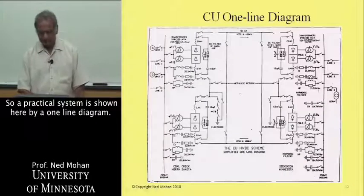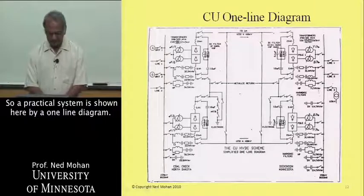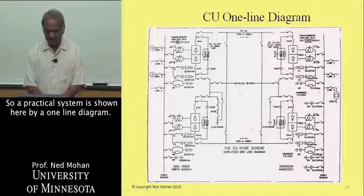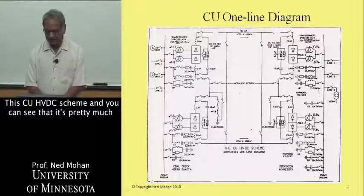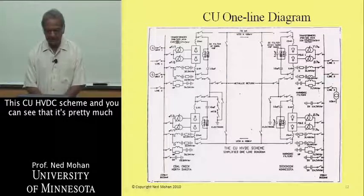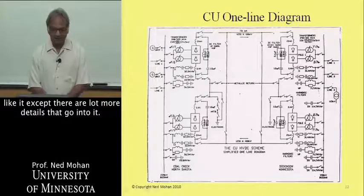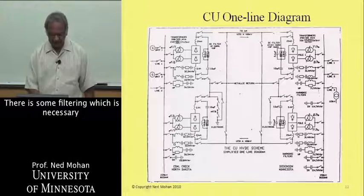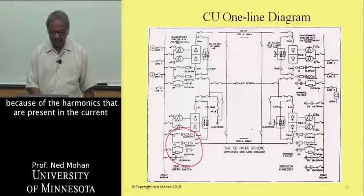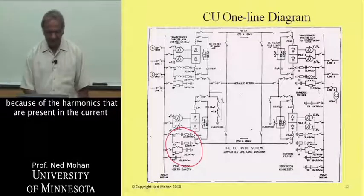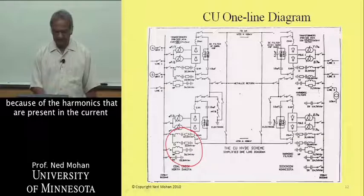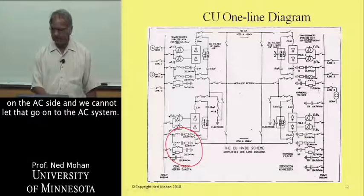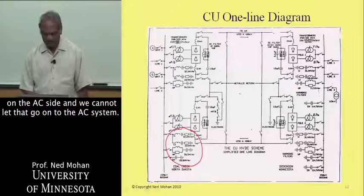A practical system is shown here by a one-line diagram, this CU HVDC scheme. You can see that it's pretty much like it, except there are a lot more details that go into it. There is some filtering which is necessary because of the harmonics that are present in the current on the AC side.